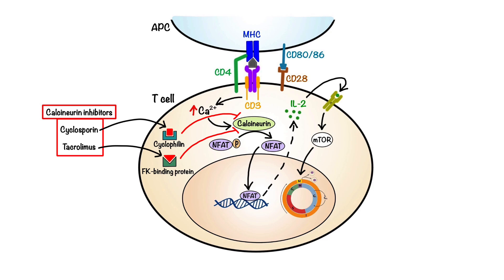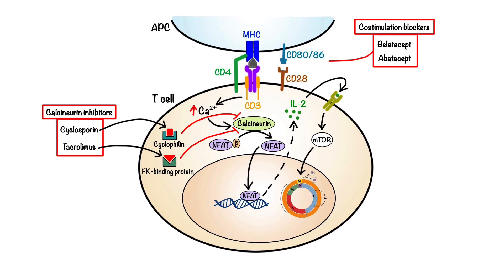Moving on to the next group of immunosuppressants: costimulation blockers. Drugs in this group include belatacept and abatacept, which work by selectively binding to CD80 and CD86 on antigen-presenting cells, thereby blocking interaction with CD28 on T cells. This in turn prevents complete T cell activation and reduces T cell proliferation and interleukin-2 production. Importantly, belatacept was designed to bind to CD80 and CD86 more strongly than abatacept, and thus has been shown to be more effective for the immunosuppression necessary to prevent transplant rejection.